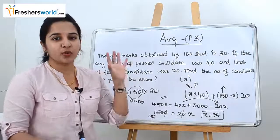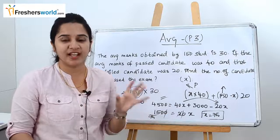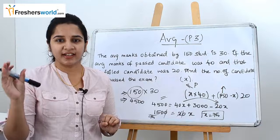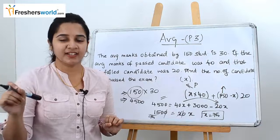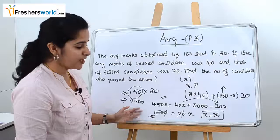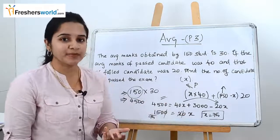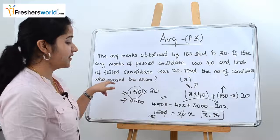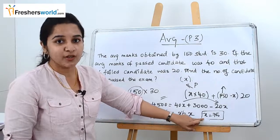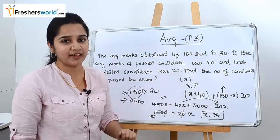On the left-hand side we took the total number of students and their average, and equated it to the passed candidates and their average plus the failed candidates and their average. By solving the equation you find the value of x. Note: in some problems they may ask for the failed candidate, so after finding x, compute 150 minus x for the failed candidates.